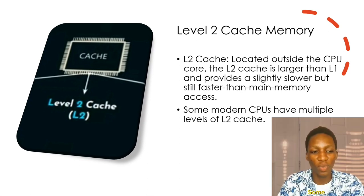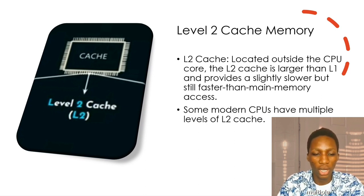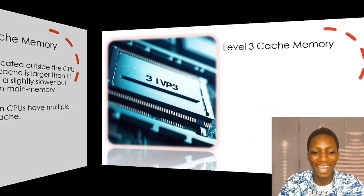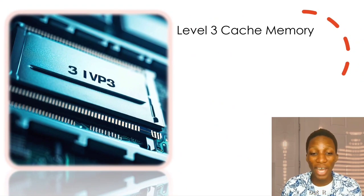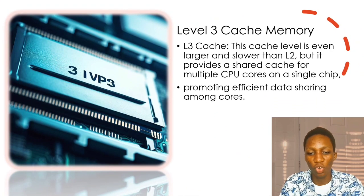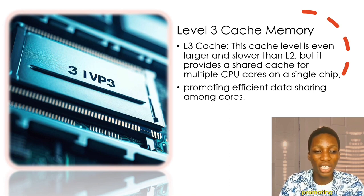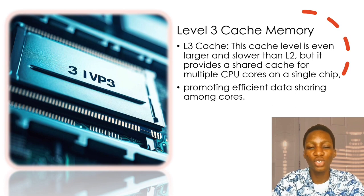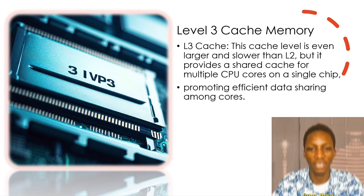Some modern CPUs have multiple levels of level 2 cache. Level 3 cache is even larger and slower than level 2, but it provides a shared cache for multiple CPU cores on a single chip, promoting efficient data sharing among cores. My other colleagues are going to continue from here. Thank you.